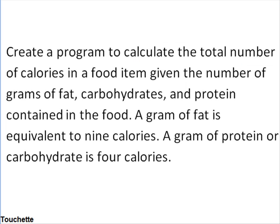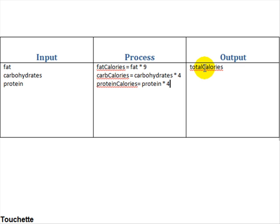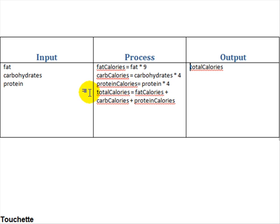Taking a look at the other two, we see they should be similar — protein or carbohydrates would be 4 calories per gram. So calories from carbohydrates would be the grams of carbohydrates times 4. The number of protein calories would also be the grams of protein multiplied times 4. We have one more calculation, because we're not quite to our output yet. We still have to calculate the total number of calories, which would be each of our categories added together: total calories equals fat calories plus carb calories plus protein calories.